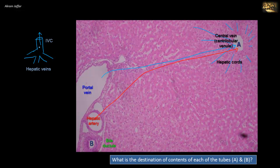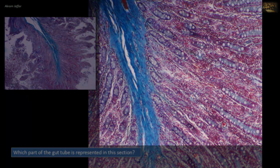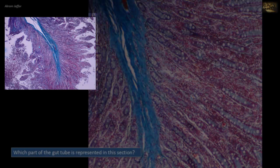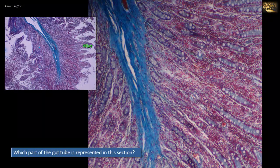The contents of the bile duct are therefore destined for the extrahepatic biliary passages, going to the duodenum. Which part of the gut tube is represented in this section? In the higher magnification photomicrograph on the right, note that the epithelial lining of the mucosa is a simple columnar epithelium with goblet cells, characterized by their almost empty cytoplasm and goblet shape — their mucus content is washed out during tissue preparation. In the lower magnification, we can see clearly the finger-like projections of the mucosa — the villi — the hallmark of the small intestine.